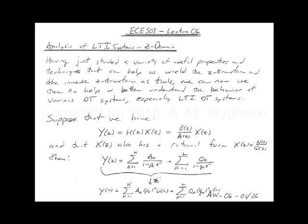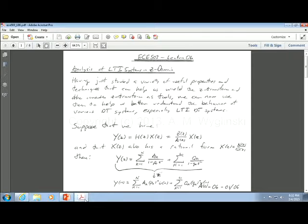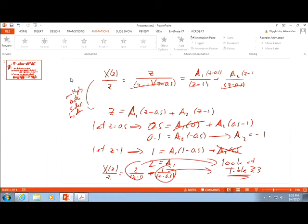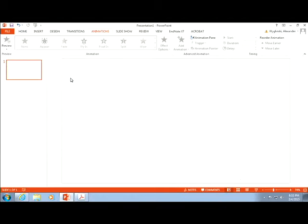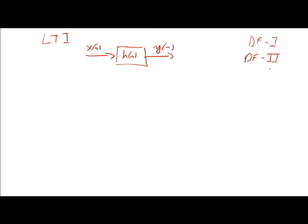So we already saw this. If you look at the Z transform, suppose I have a system. This is where it's really useful, especially if it's an LTI system. So let's say you have an LTI system represented by H of N, and you have X of N and Y of N. If it's like a DF1 or DF2 system, it has an array of delays, adds, multiplies, and the like.